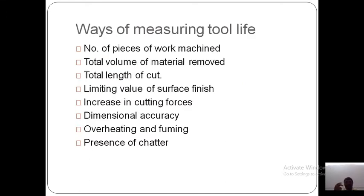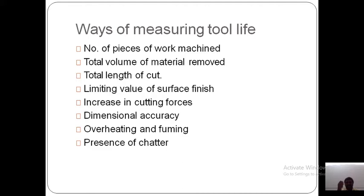Now, in which way can tool life be measured? It can be measured by: the number of workpieces machined, the total volume of material removed from the workpiece, the total length of cut of the workpiece, the limiting value of surface finish, increasing in cutting forces when the tool is in contact with the workpiece, dimensional accuracy, overheating due to temperature rise, rupture, fuming, and the presence of chatter. These are all ways of measuring tool life.